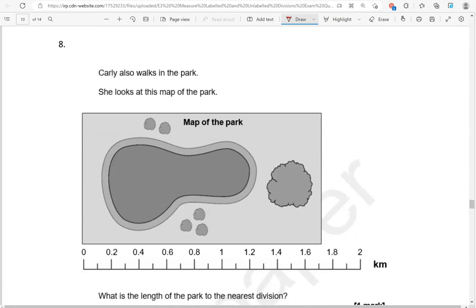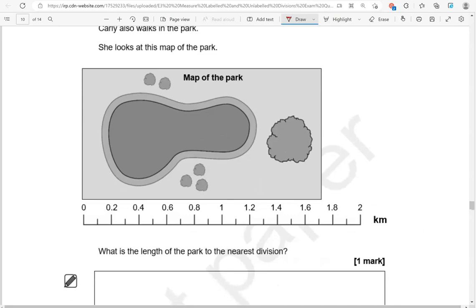Carly also walks in the park. She looks at this map of the park. What is the length of the park to the nearest division? It says to the nearest division, so it should be any, it could be any of them, labeled or unlabeled. So this is the nearest division, which is halfway between 1.6 and 1.8. So that is 1.7 kilometers.